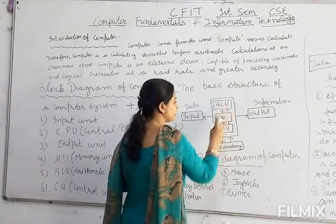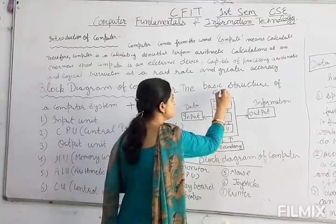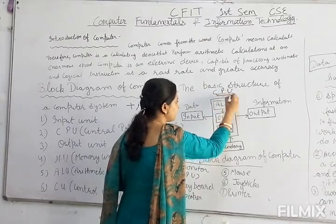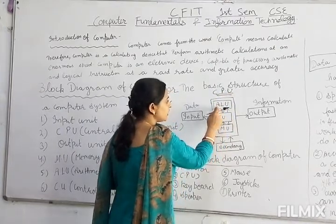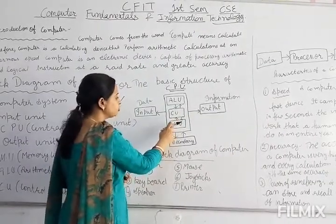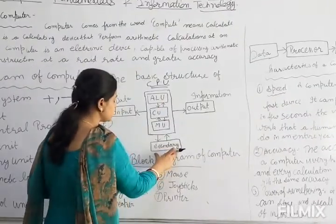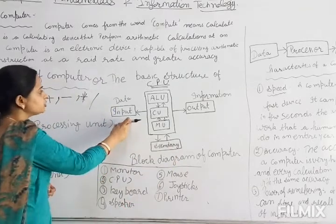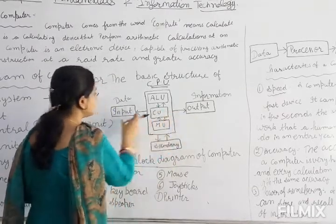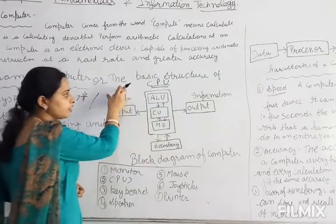सबसे पहले हमारे इसके three parts हैं जो working कर रहे हैं CPU के अंदर। CPU का block diagram है: ALU (Arithmetic Logical Unit), CU (Control Unit), MU (Memory Unit) - यह हमारी secondary memory के अंदर आती है जिसमें two types की information होती है. Input हमारा data होता है.